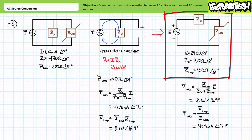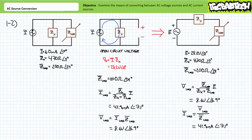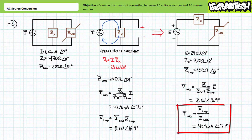A subsequent application of Ohm's Law demonstrates current through the variable load impedance will be 42.9 milliamperes at an angle of negative 7.1 degrees. Equivalency has indeed been maintained and the variable load impedance is none the wiser to the substitution.